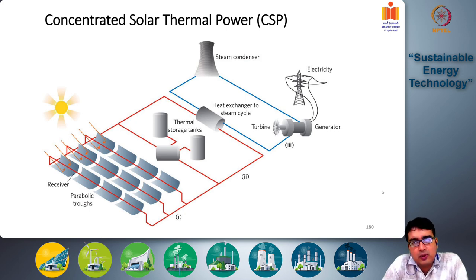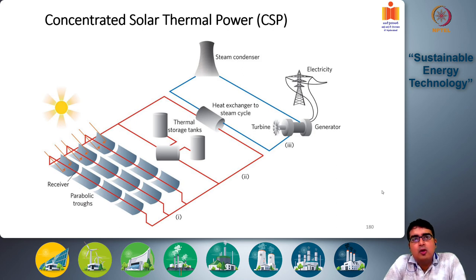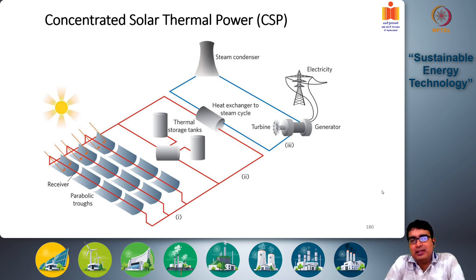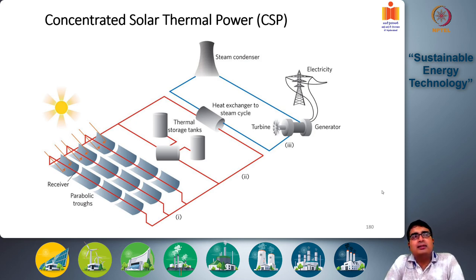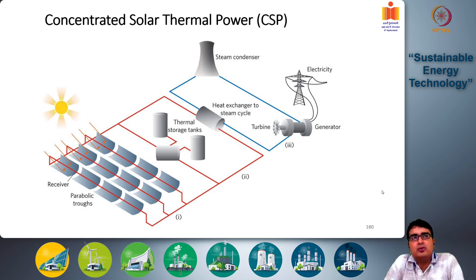Over the past few lectures we discussed solar hot water systems where the heat is collected through either flat plate collectors or evacuated tube collectors, and this heat is used to heat water or convert water into steam for domestic and process heat applications in industries.